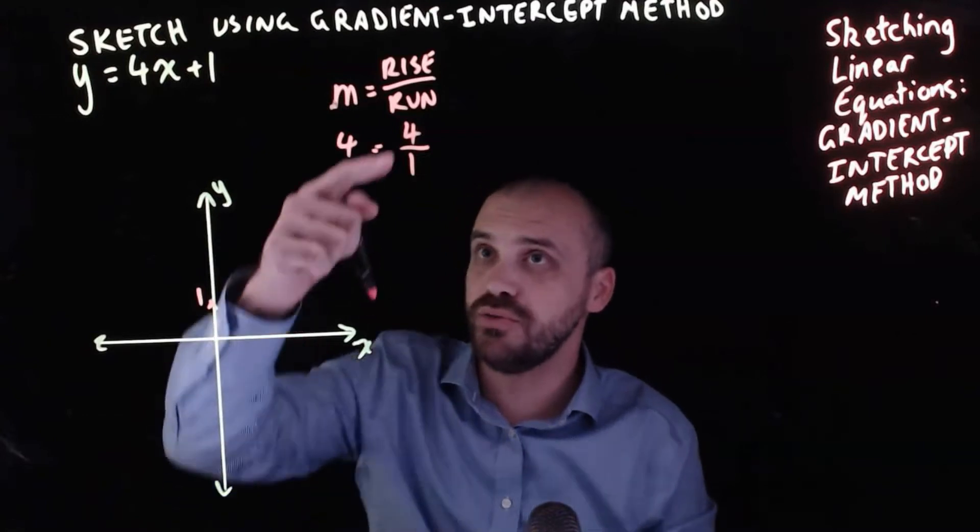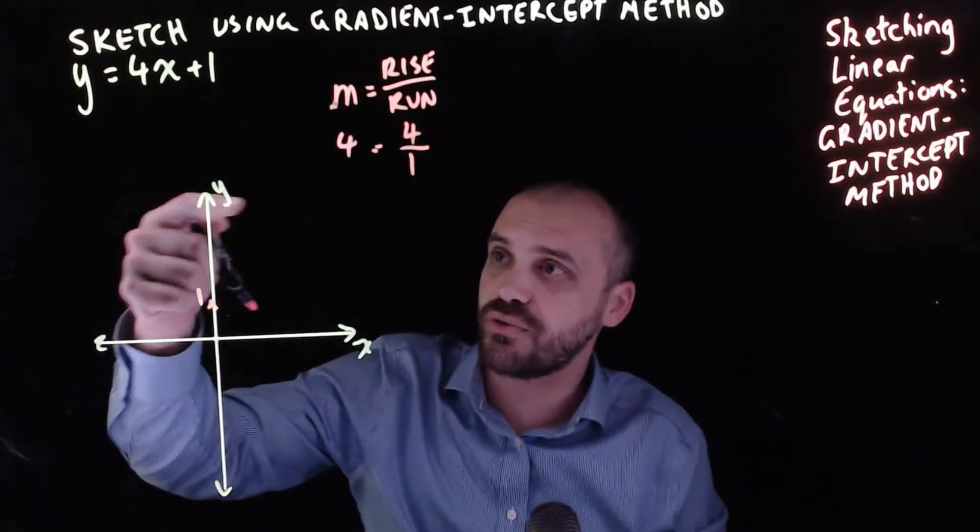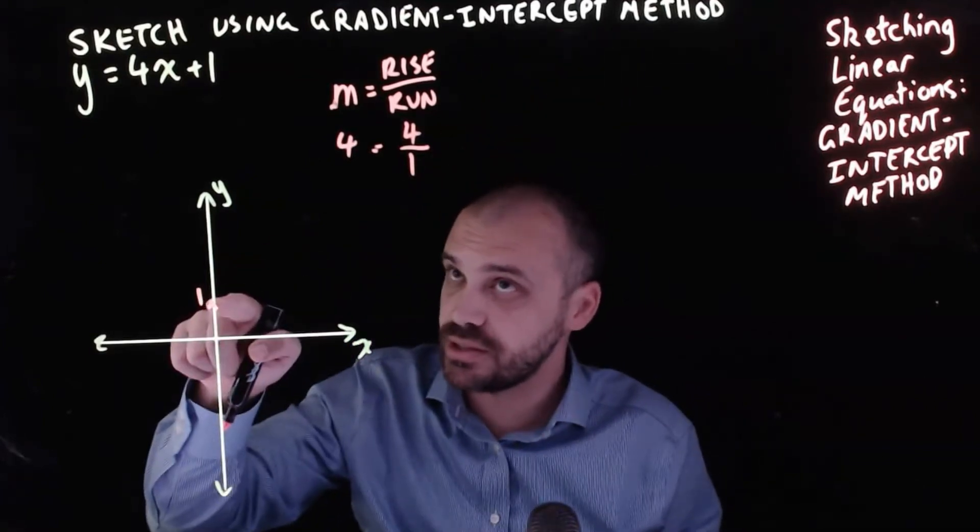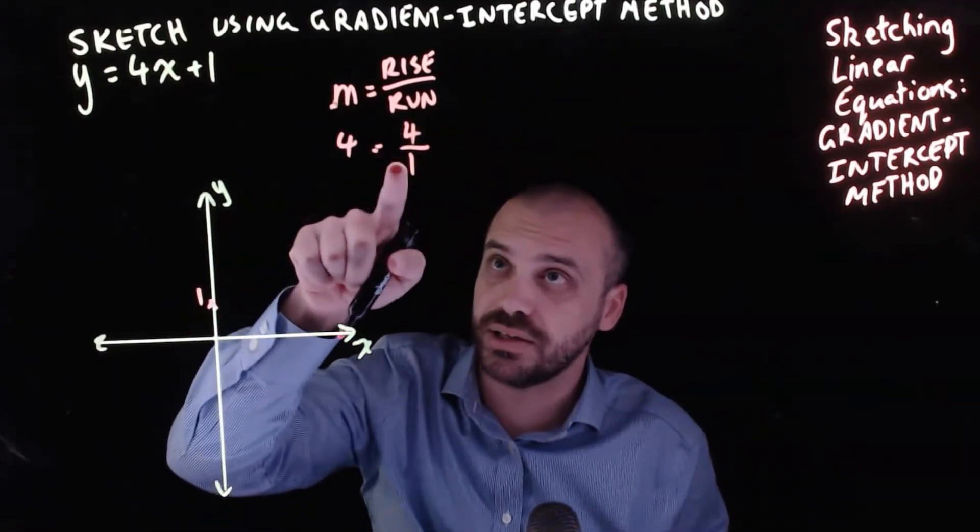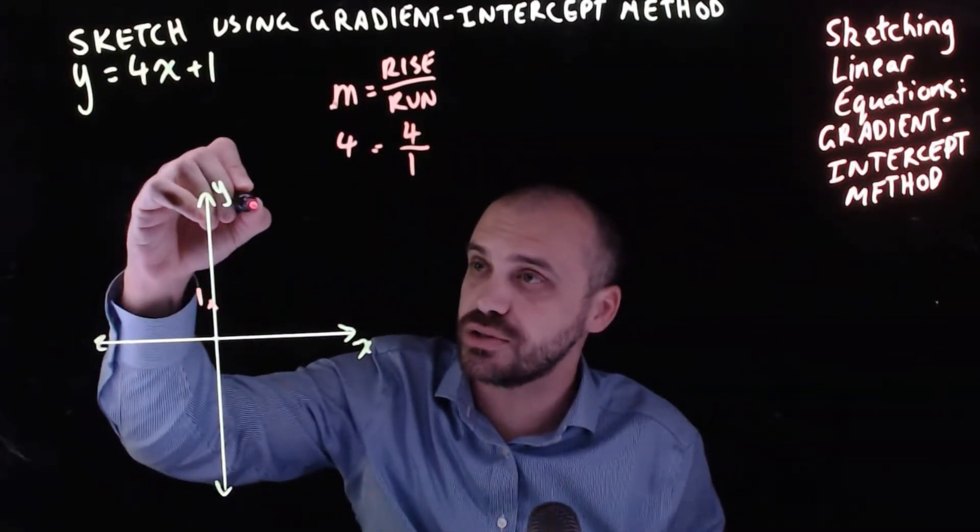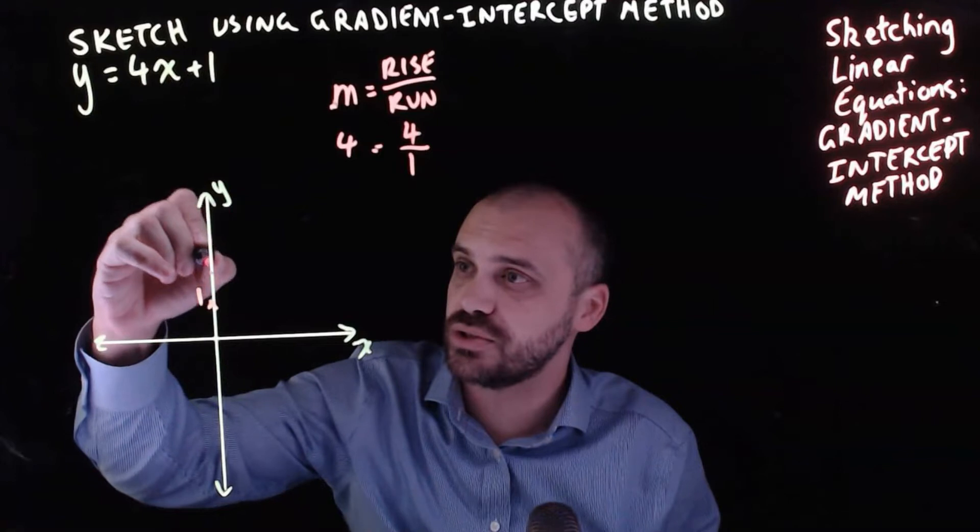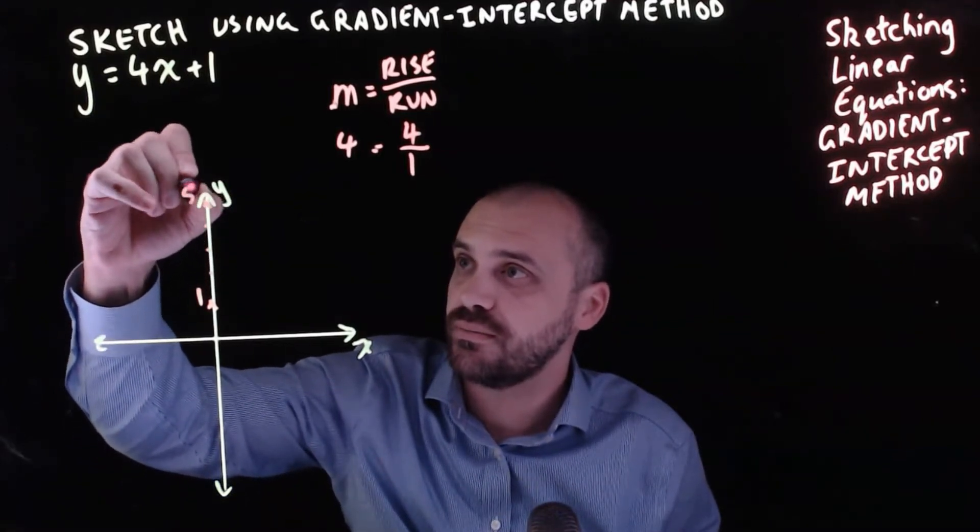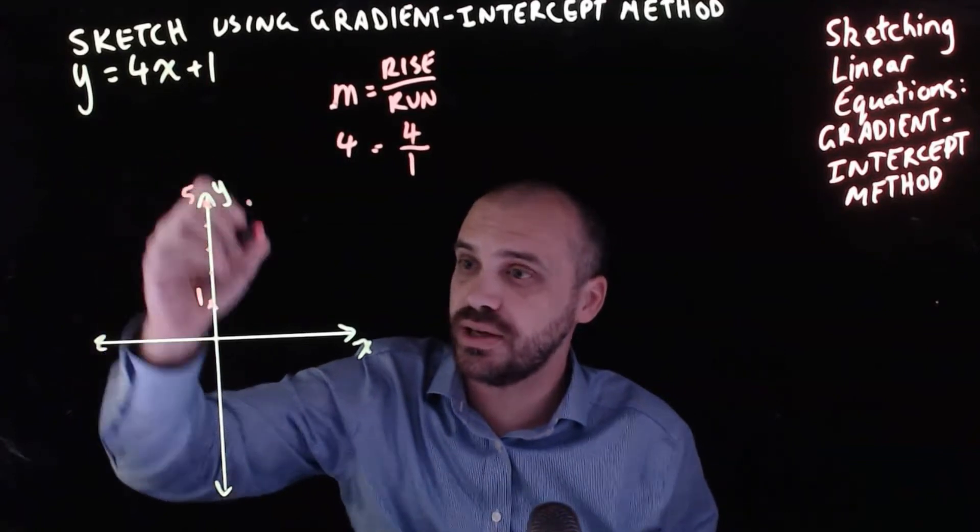It means that it moves up 4 for every 1 it moves across. So from our intercept we do exactly what that says. We go up 4 and across 1. And that'll bring me to 2, 3, 4, 5. Let's make it there. And 1 across. Let's make that there.